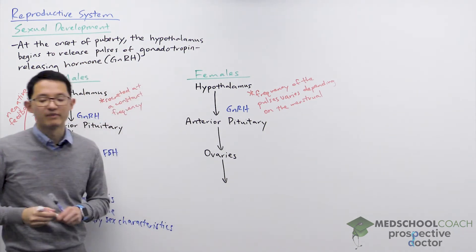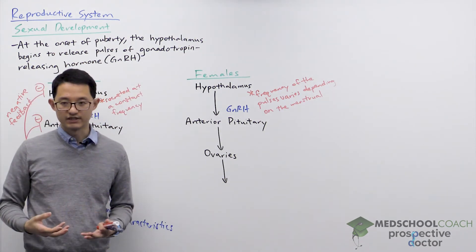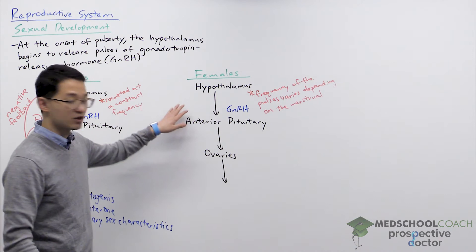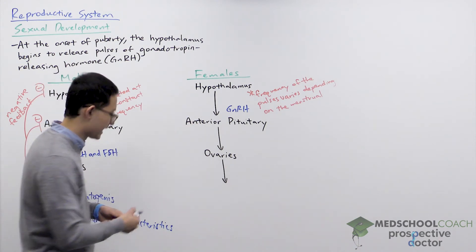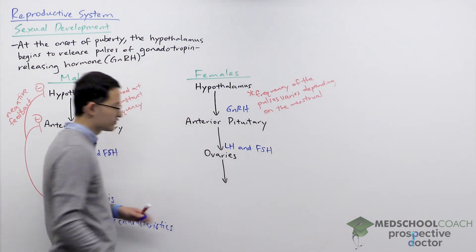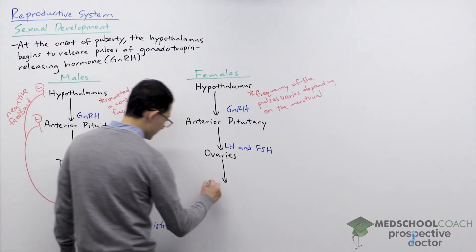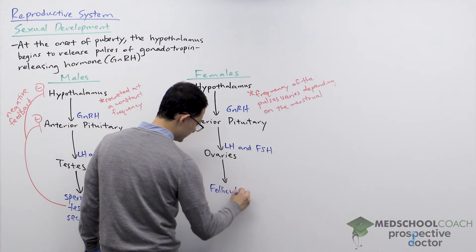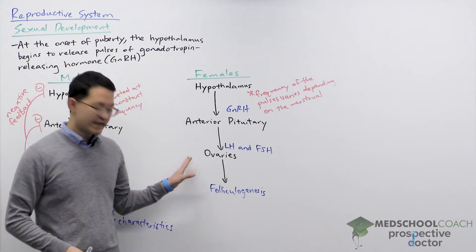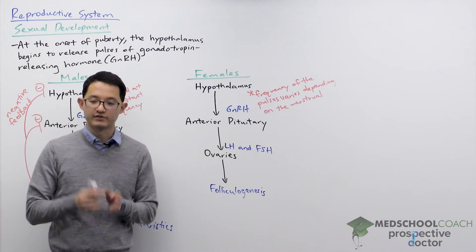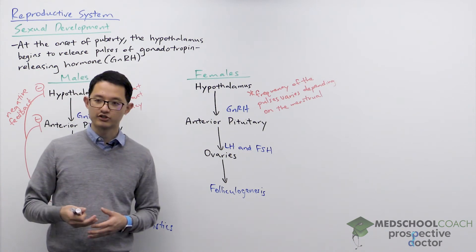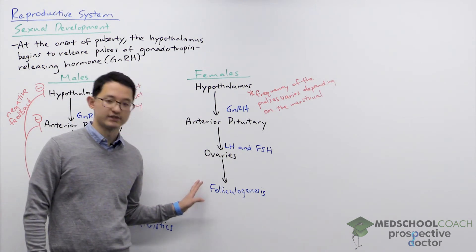That means during some periods of the menstrual cycle there are higher frequency GnRH pulses, and in other periods there is a lower frequency. GnRH similarly acts on the anterior pituitary to cause the release of LH and FSH. LH and FSH then act on the ovaries to stimulate folliculogenesis — the maturation of the follicle. The gametes produced by the ovaries are contained in follicles, which are initially very small but mature and develop into larger structures with LH and FSH stimulation.